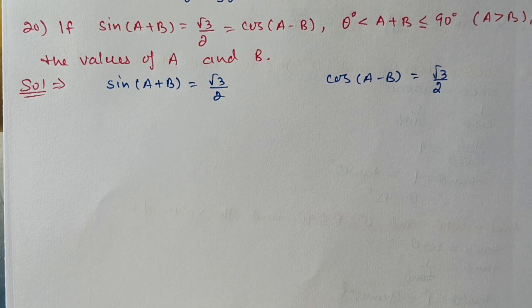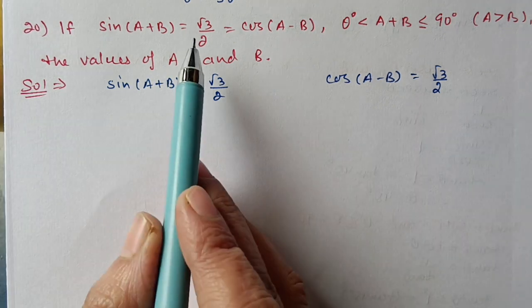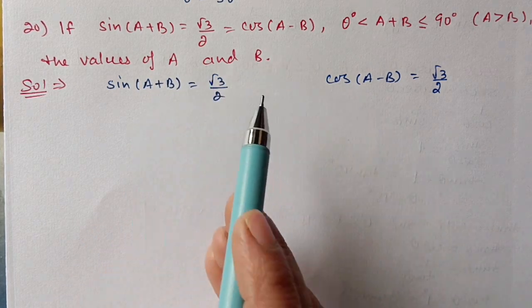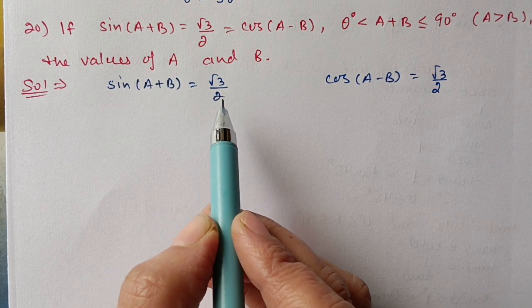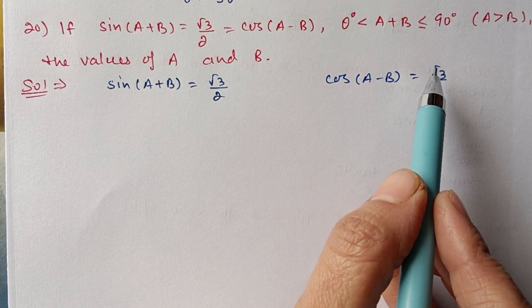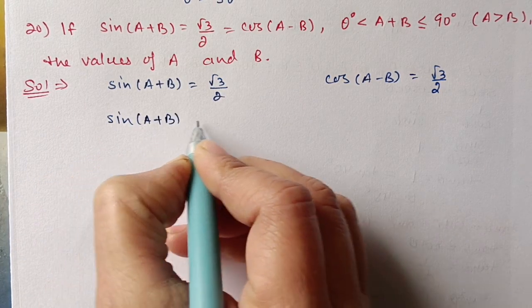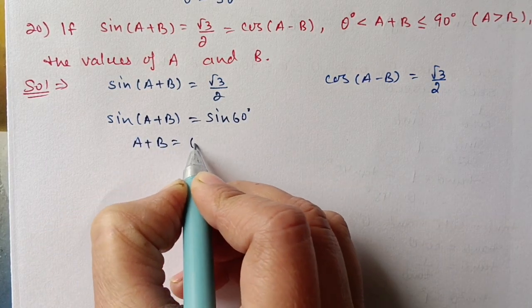Question 20: If sin(a + b) equals root 3 by 2 and cos(a - b) equals root 3 by 2, and a + b is between 0 and 90, find the value of a and b. Since root 3 by 2 equals both sin(a + b) and cos(a - b), we change root 3 by 2 into sin for the first and cos for the second. Root 3 by 2 is the value for sin 60 degrees, so a plus b equals 60 degrees — this is the first equation.